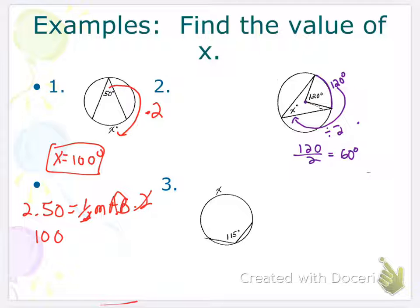So again, you have to remember that the central angle and the arc are going to have the same measure, but then to find the inscribed angle, given the arc, you divide it by 2.